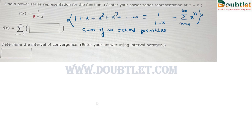In this question we have to find out the power series representation of the given function. First of all, we know that the sum of infinite terms of a geometric sequence 1 + x + x² + x³, whose common ratio is x, increases to infinite terms and its sum is represented as 1 divided by 1 minus x. In summation form, this can be written as the sum from n equals 0 to infinity of x to the power n.